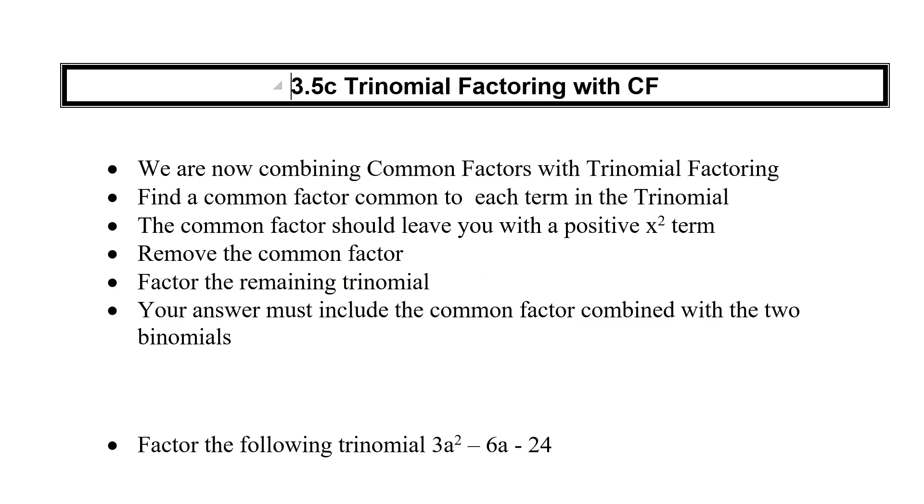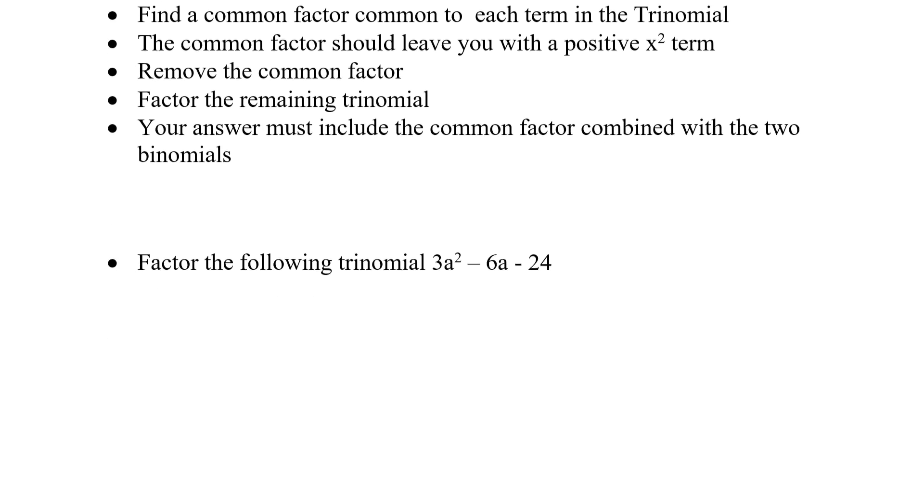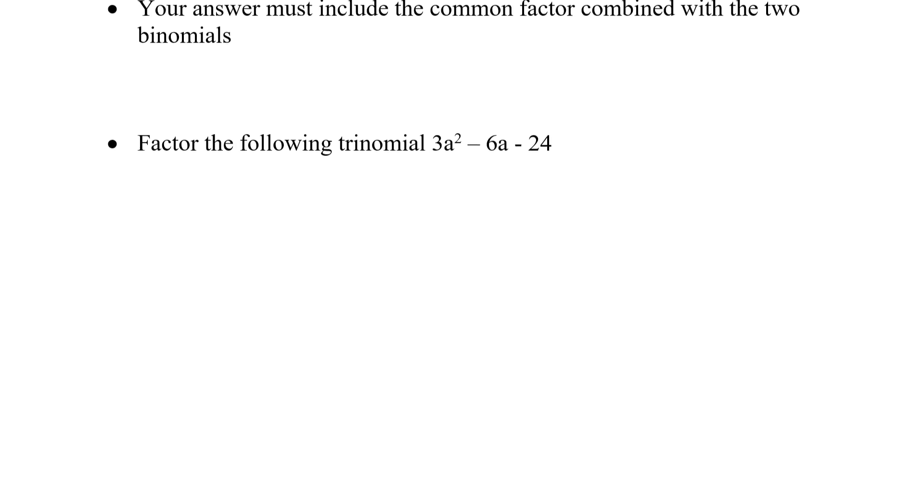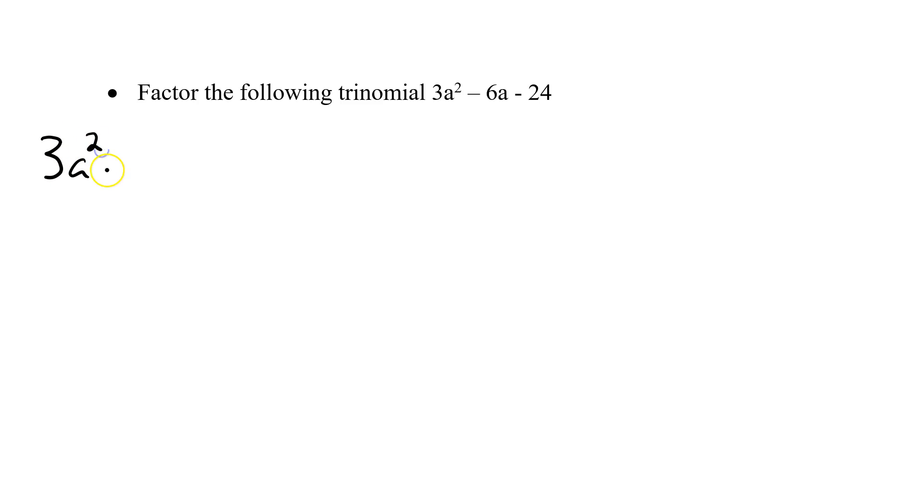So let's look at our first example here. Factor the following trinomial: 3a² - 6a - 24. So the first thing we do is we factor this. So I write out each term: 3a². Now when we're getting a common factor, we don't need to worry about that negative sign, so I'll have 6a and I'll have 24. So what's common to all three? Let's factor the 3: 1 and 3.